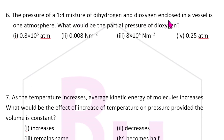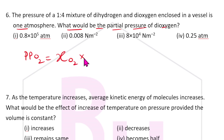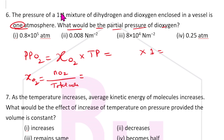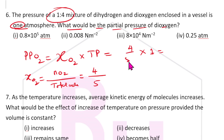Question 6: A 1:4 mixture of dihydrogen and dioxygen is enclosed in a vessel at 1 atmosphere total pressure. The partial pressure of dioxygen equals mole fraction of O₂ multiplied by total pressure. The mole fraction of O₂ = 4/(4+1) = 4/5 = 0.8. So partial pressure of O₂ = 0.8 atmosphere.